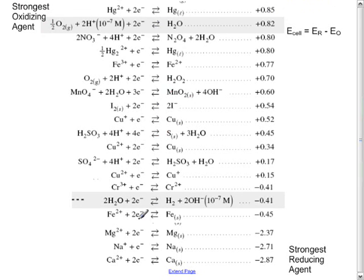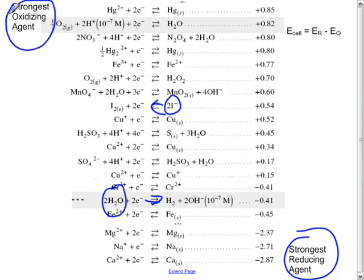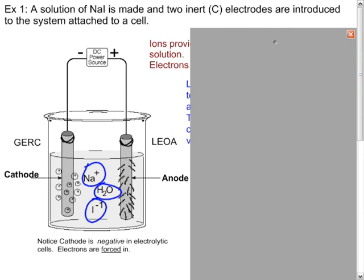Now that we've picked our most likely reactions, which are this water reaction and the iodine reaction, with our strongest reducing agent and our strongest oxidizing agent, we can go back and predict and label our cell, which will happen in part two of this series. This is the end of part one of the review for an electrolytic cell.